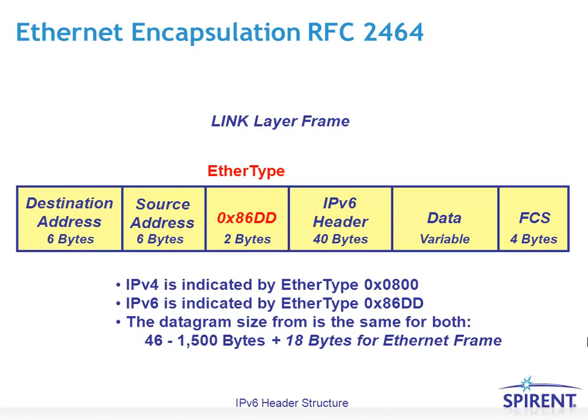Before we get to the IPv6 header, how do we know when we receive a frame that there is an IPv6 header to begin with? An Ethernet frame has an Ethernet type field, which we've been used to looking at the value of 0800 for IPv4. The value for IPv6 is hexadecimal 86DD instead.